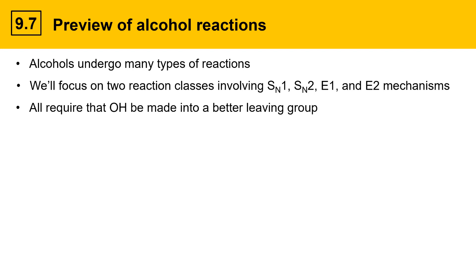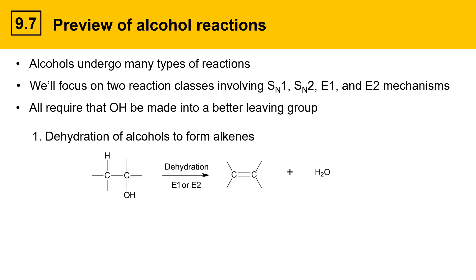The first class of reactions we'll look at are dehydration of alcohols to form alkenes. The reaction can be summarized like this: there's an alcohol with a beta proton attached, and the dehydration mechanism can go via E1 or E2 to form a double bond between two carbons with the loss of water.